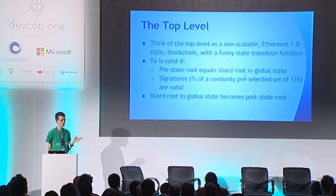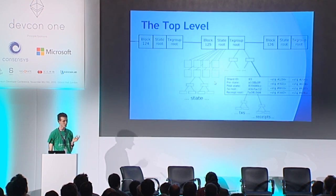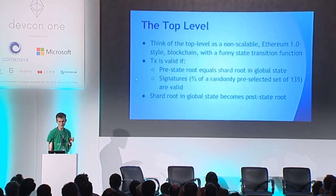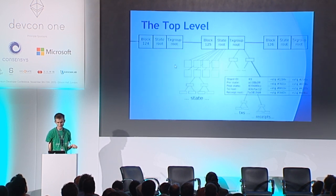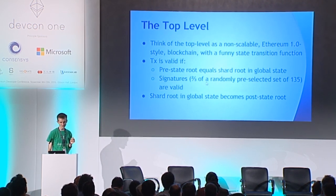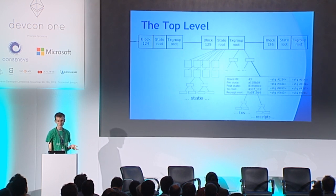One way to think about this intuitively: the top level is like a non-scalable Ethereum 1.0 style blockchain, except it has funny state transition rules where instead of validating transactions, it validates transaction groups. A transaction group is valid if the pre-state root matches and if the signatures are valid. If those two things line up, it takes the signatures as proxy evidence that everything else was done correctly, and then the post-state root becomes the state root of that particular shard.